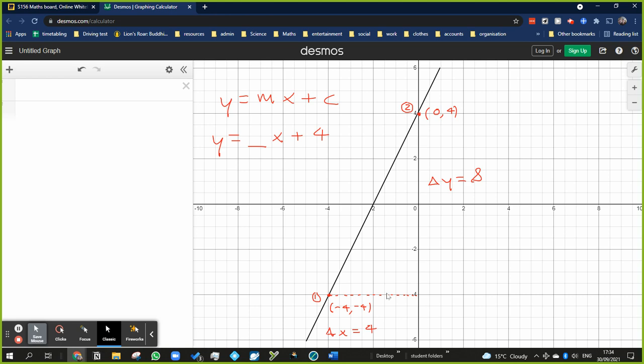So the change in x, as it goes from here to here, is just 4. And the change in y, as it goes all the way from here all the way up to the top, is 8. So to work out the gradient, which is the m value, we do the change in y, remember, divided by the change in x. And that's equal to 8 divided by 4, which is equal to 2.